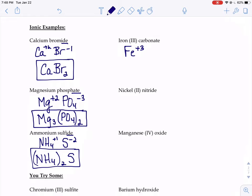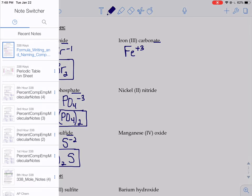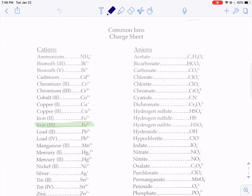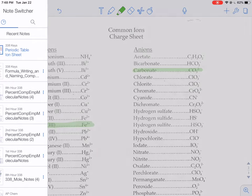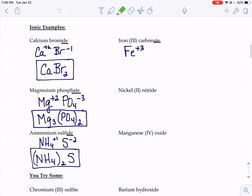Now we have carbonate. Carbonate, that 8 ending, anything that ends in 8, you've got to look up on that charge sheet. So we've got to go find carbonate. Carbonate is over here on the right-hand side. CO3 with a negative 2 charge.